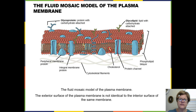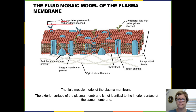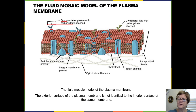On the outer surface, some transmembrane proteins have little carbohydrate attachments — short chains of sugars. If a chain of sugars is attached to a protein, it's called a glycoprotein. The prefix 'glyco' means a short chain of sugars. If you have a glycolipid, that means you have a short chain of sugars attached to some type of lipid.